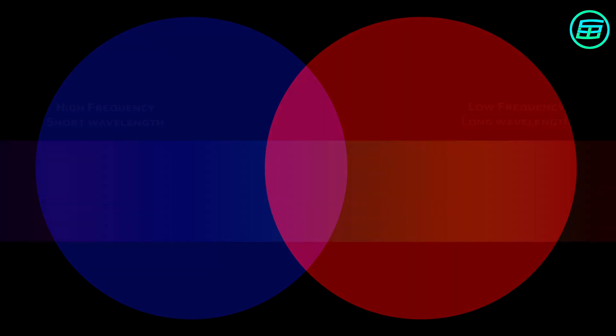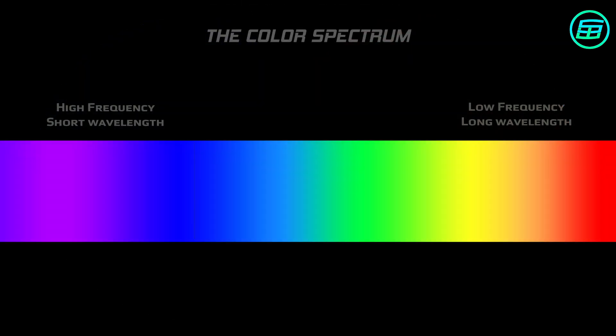But magenta has a different story. Magenta is a mixture of blue and red. If we look at the color spectrum, between red and blue is green, another primary color.